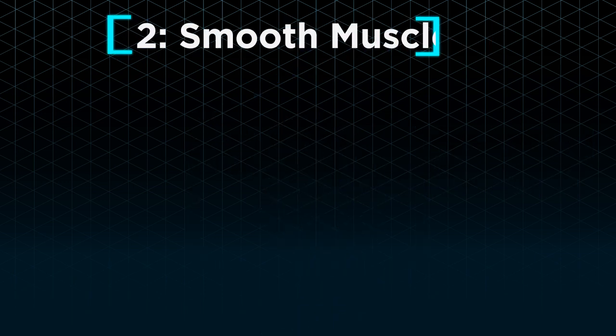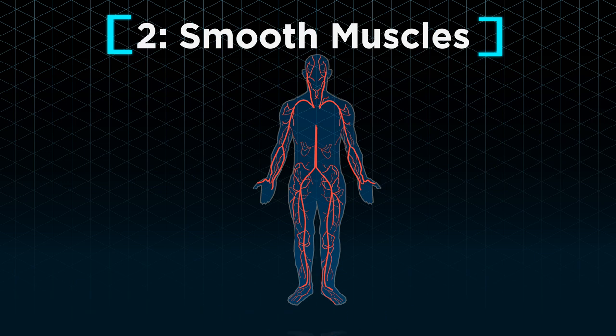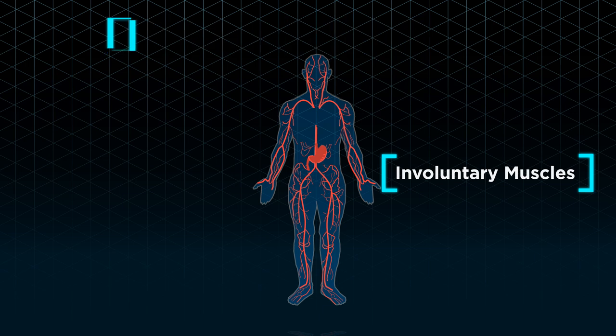Smooth muscles, which make up your blood vessels, stomach lining, and other organ linings, are involuntary muscles as their movement is not under our control. For example, it is impossible for us to tell our stomach to churn and digest our food faster.